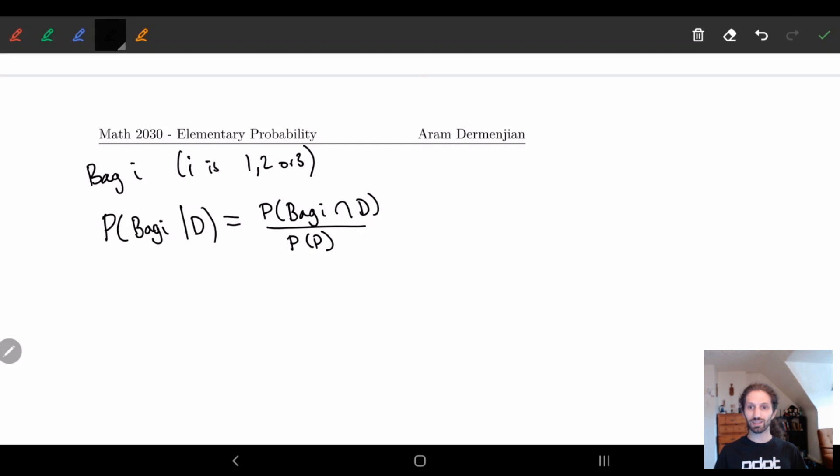We also know this is going to give us D given bag I times the probability of bag I divided by the probability of D. My P's and D's are starting to look similar to one another so let me clean this up. So let's look at this for the three bags.